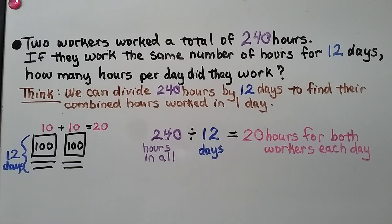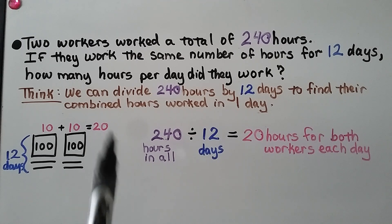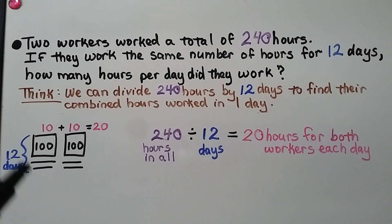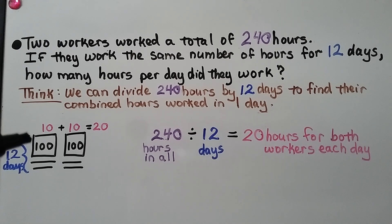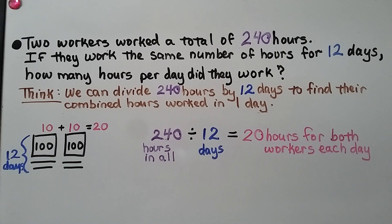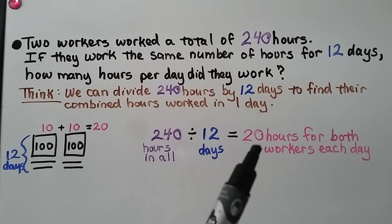Two workers worked a total of 240 hours. If they worked the same number of hours for 12 days, how many hours per day did they work? We can divide 240 hours by 12 days to find their combined hours worked in one day. We have 240 hours in all divided evenly into 12 days — 100, 200, 210, 220, 230, 240. For 12 days we make 12 groups, and that would be 10 plus 10 — 20 hours for both workers each day. Because there are two workers who together worked 20 hours, we do 20 divided by 2 to know that they each worked 10 hours.